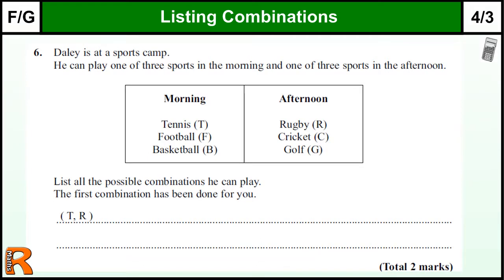Listing Outcomes. Grade F to G, GCSE Level 3, National Curriculum 4. List all the possible combinations that you can play when daily is playing sports at a camp. In the morning you play one of these, and in the afternoon you can play one of those.